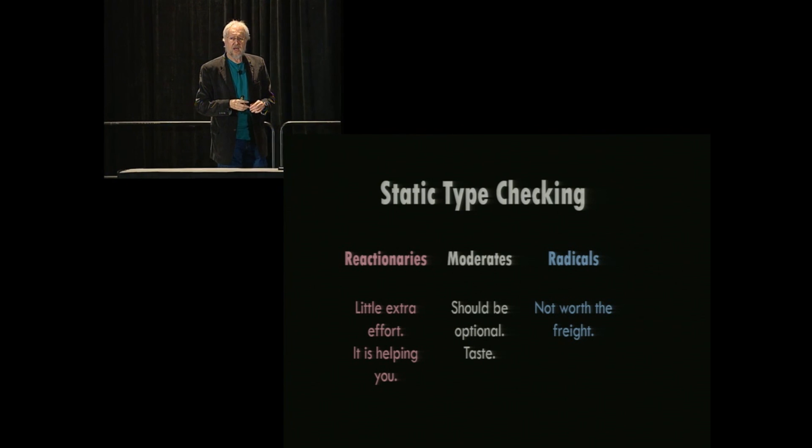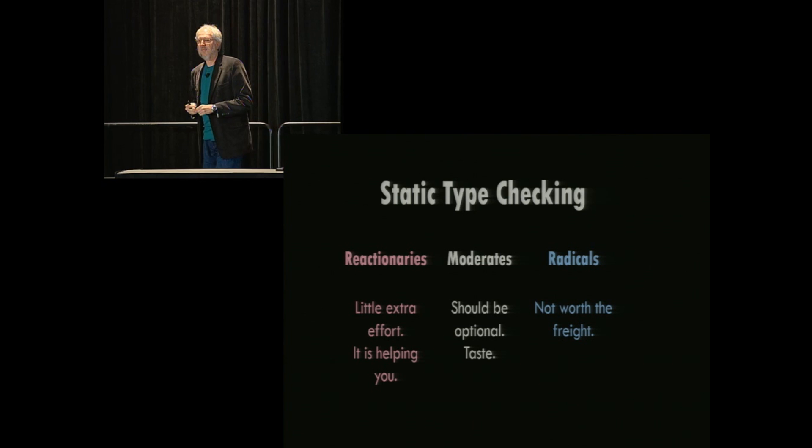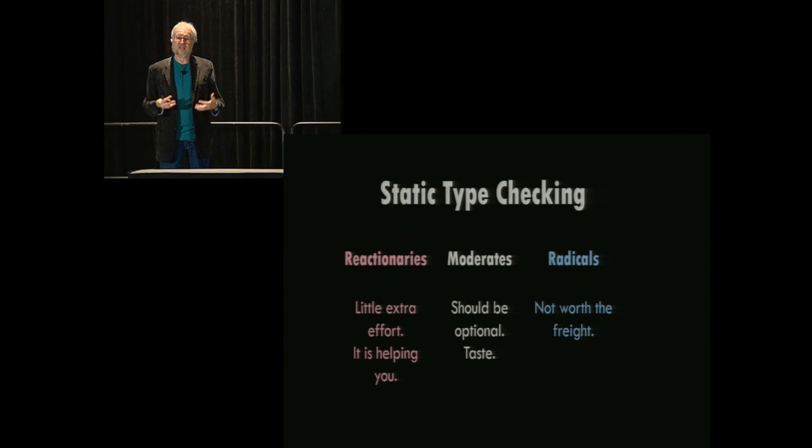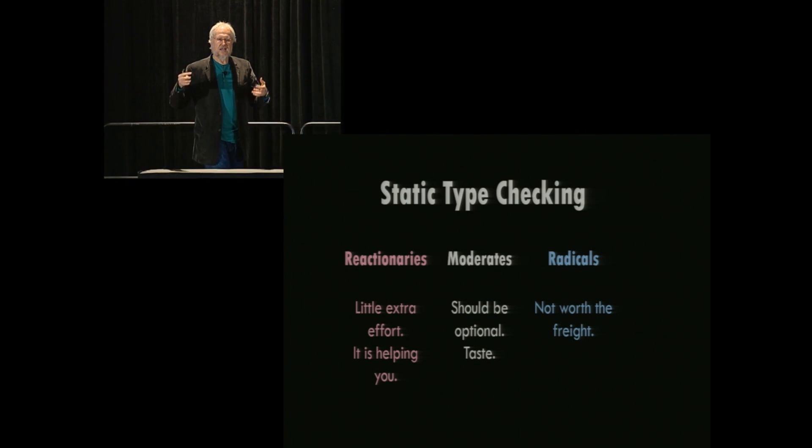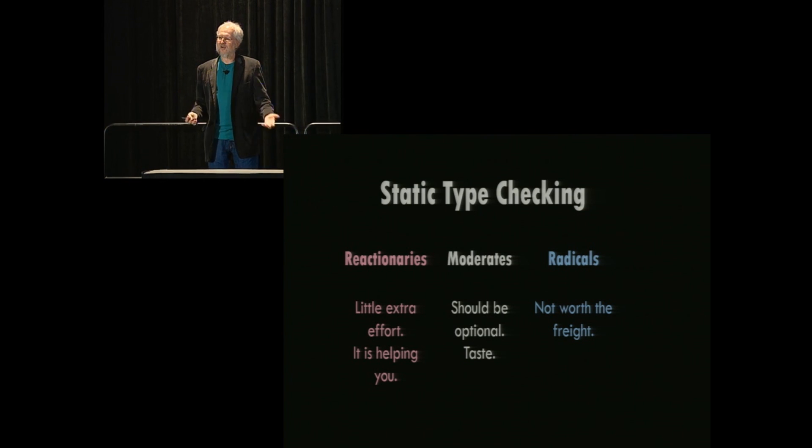And these arguments always start with the radicals. In this case, the radicals are you guys. The radicals are people using languages with dynamic typing and finding out they work, despite all the predictions from the static typing community that they cannot possibly work. You cannot possibly write good programs, large programs, valuable programs without static typing. And you guys do it every day. And they don't understand how that can happen. And so the argument against them is not that it's not a good idea. It's just that it's not worth the freight. But there's all this additional work you have to do in using a type system. And it provides some benefit, but not enough benefit to justify that cost. And so you don't need to do it. You're better off without it.